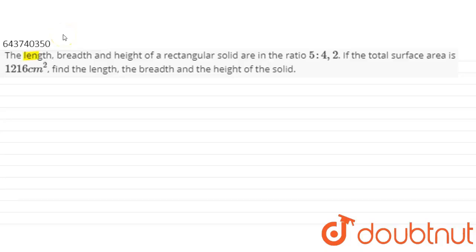Hey guys, we have a question. The length, breadth and the height of a rectangular solid are in the ratio of 5 to 4 to 2. If the total surface area is given as 1216 cm square, then we have to find the length, breadth and the height of that solid. So in this question,